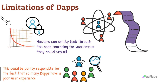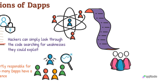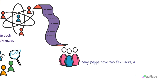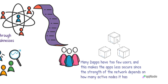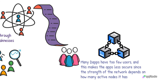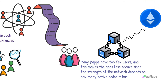Next on the list of limitations is low user numbers. Usually, the strength of a decentralized app depends on the number of users it has. Many dApps have too few users, which makes the apps less secure since the strength of the network depends on how many active nodes it has. Another limitation is that dApps can lead to congestion of the blockchain supporting them. Networks like Ethereum have a very high number of users, and sometimes this causes the network to get congested.